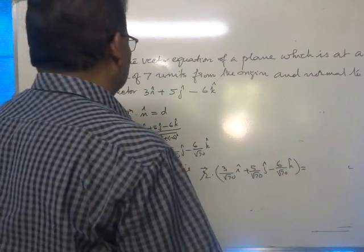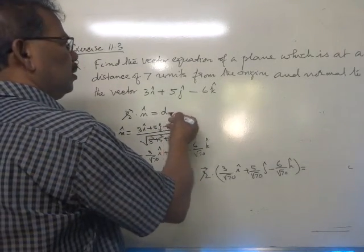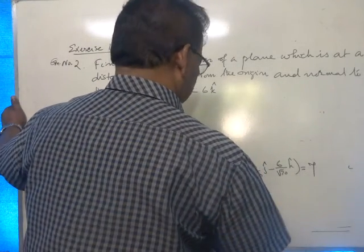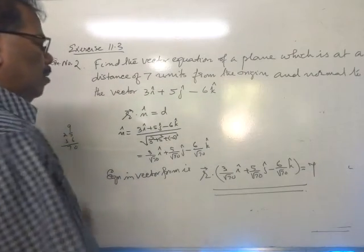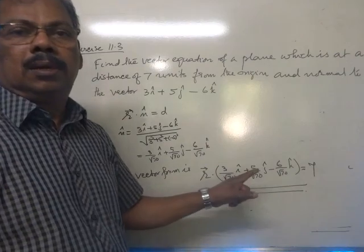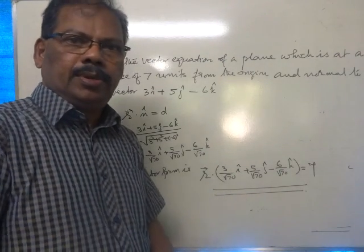On the right we get d, that is the actual distance, that is 7. This is the required equation of the plane in vector form.